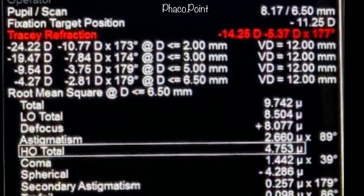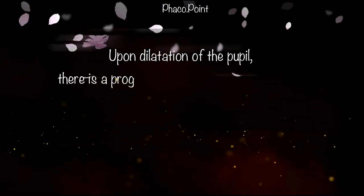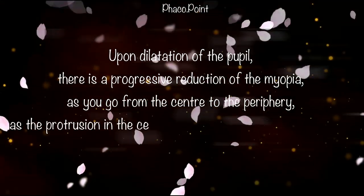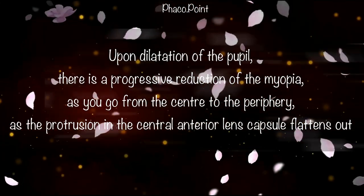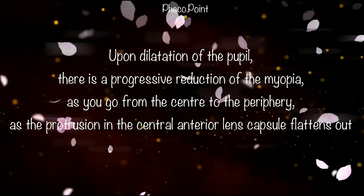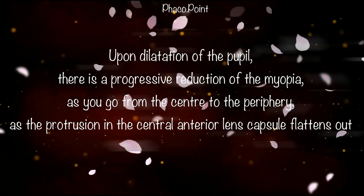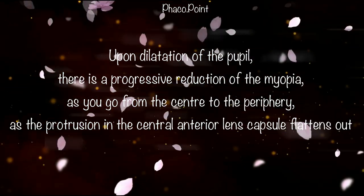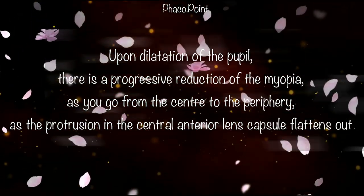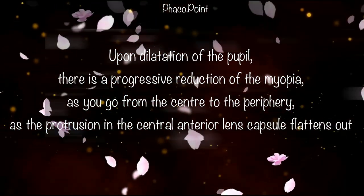This denotes that the very high induced myopia occurs as a result of the protrusion of the anterior lens capsule and lens in the centre at the pupillary area. With progressive dilation of the pupil, light rays pass through the flatter peripheral anterior lens capsule, resulting in a reduced amount of curvature myopia induced by the anterior lens surface.